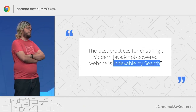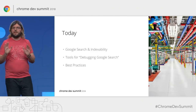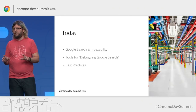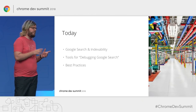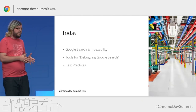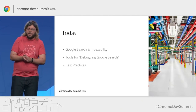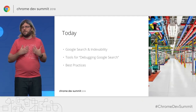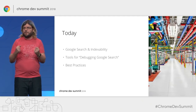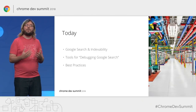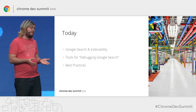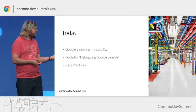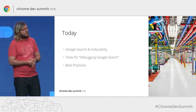MARTIN SPLITT: Like Facebook, Twitter, and all the other wonderful ones. So now that we know what we want to address, how are we going to split this up? First things first, it makes a lot of sense to quickly go over how Google Search actually does the indexing and figures out what content there is on the web. Then we're going to look into tools to help debug what we're seeing. And last but not least, we don't want to just debug things after they happen — we want to get ahead of that. We'll talk about best practices for indexable content.